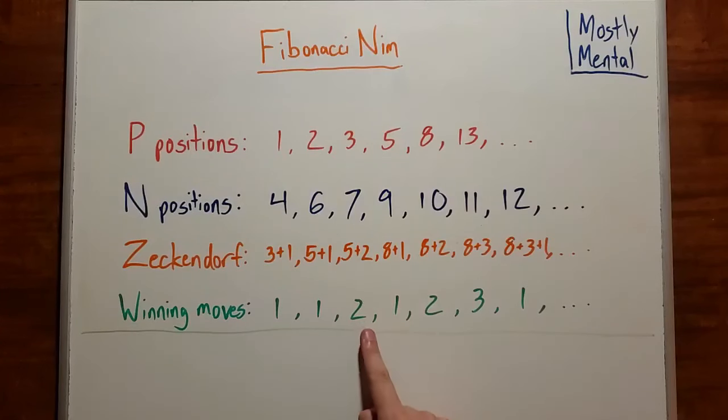And for 12, which is 8 plus 3 plus 1, we should take 1. And so on. And that's not just true for the first move. In general, it seems like if we can remove the smallest Zeckendorf term from any position, that's a winning move. And if we can't, there's no way to win.